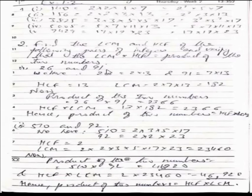26 and 91 are the given numbers. We have the prime factors of 26 as 2 into 13 and for 91 it is 7 into 13. HCF of both numbers is 13 and LCM is 2 into 7 into 13 which is 182. The product of the two numbers is 26 into 91, which equals 2366.